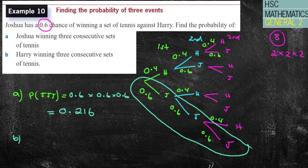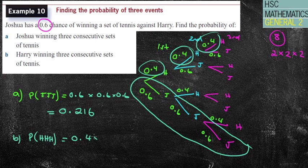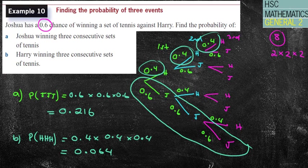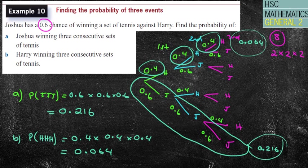For part B, Harry winning three sets: that's the opposite branch, 0.4 times 0.4 times 0.4, or 0.4 cubed, which gives 0.064. So Harry's probability is 0.064 and Joshua's is 0.216. If you wanted the probability that either Josh wins all three or Harry wins all three, you would add those two together — but that's not asked in this particular question.